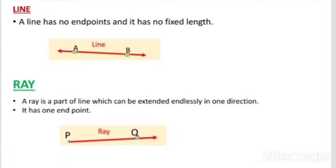What is a ray? A ray is a part of a line which can be extended endlessly in one direction. It has one end point. In the given figure, ray PQ is a ray, and P is a fixed point from which we cannot extend the line. But Q is not fixed — we can extend the line in that direction. So a ray has only one fixed end point.